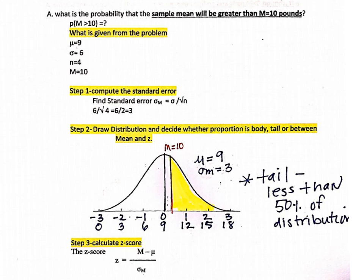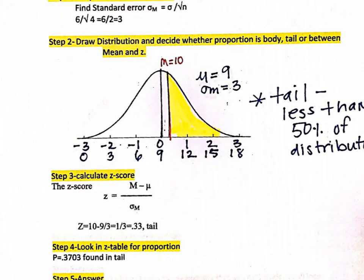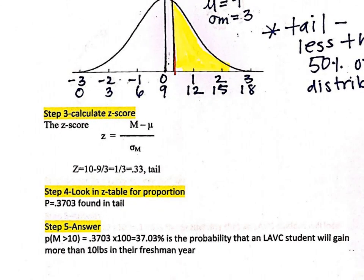We're looking for a mean of 10, and we want the area greater than 10 — that's the yellow shaded area. Because it's less than 50% of the distribution, it's considered a tail. The z-score equals the sample mean minus the population mean divided by the standard error: (10 minus 9) divided by 3, which equals 1 divided by 3, or 0.33. We note that it's a tail so we can easily find it in the z-score table. Looking up 0.33 in the tail, the probability associated with it is 0.3703.